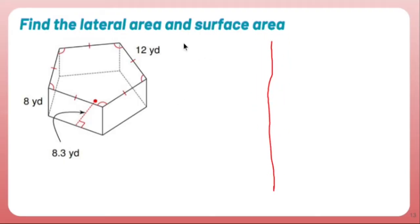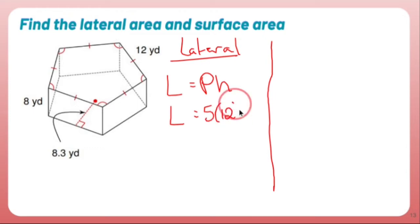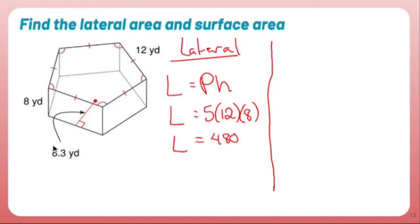Let's find the lateral area first. You find the lateral area of any prism by doing the perimeter of the base times the height of the prism. The perimeter of the base: we have a pentagon with five sides, and each side is 12 yards long. So five times 12 is 60. The height of this prism is 8. So 60 times 8 is 480 yards squared.